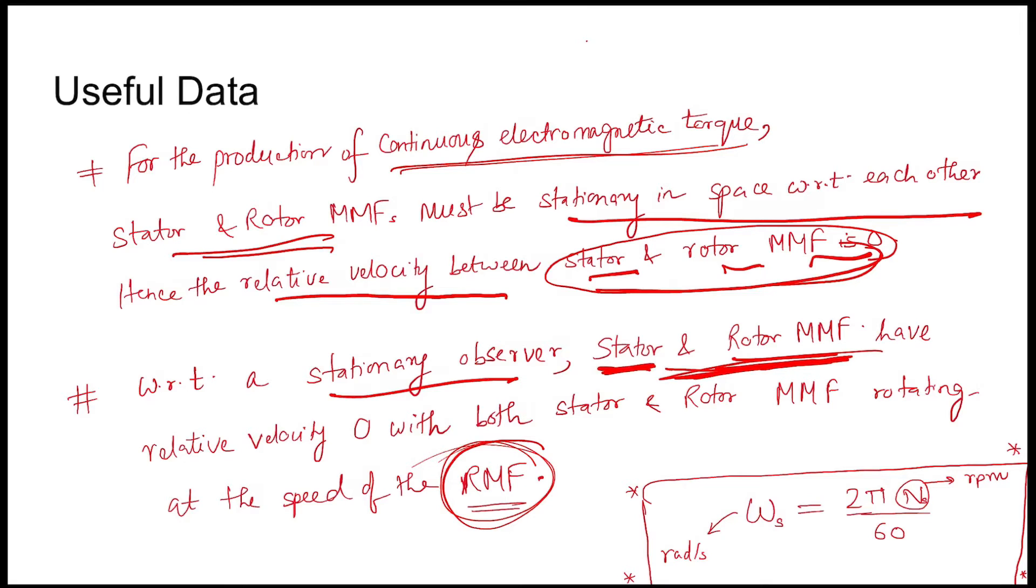Now coming to the solution: the stator MMF with respect to the stationary frame of reference is rotating with Ns, that is the synchronous speed, which is 120f by P, where P is the number of poles and f is the frequency. This equals 1500 rpm. Nr is also 1500 rpm.